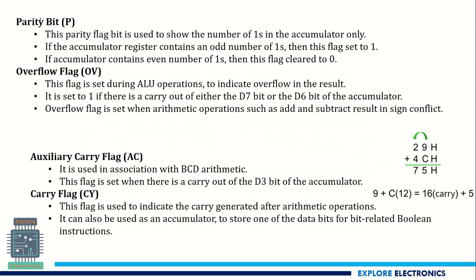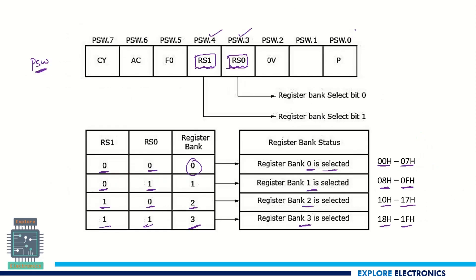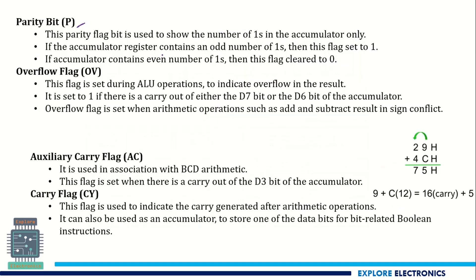And now if you look at the parity bit, the first and foremost is the zeroth bit of the PSW indicating P, that is parity. If the output of the ALU, that is present in the accumulator, this parity flag is going to show or it is going to set when the number of 1s is odd. You can see here in the second point, if the accumulator register contains the odd number of 1s.